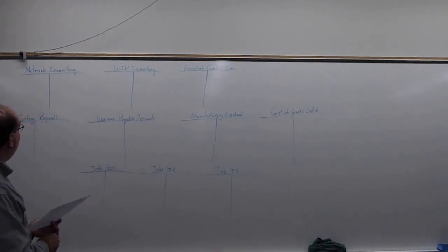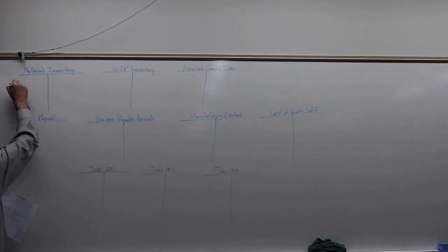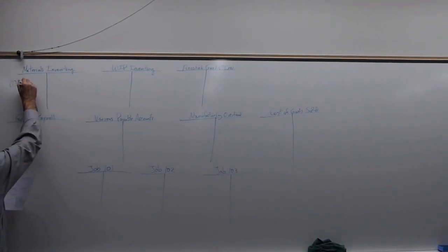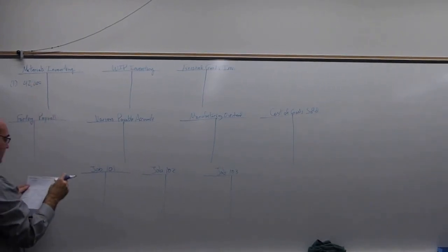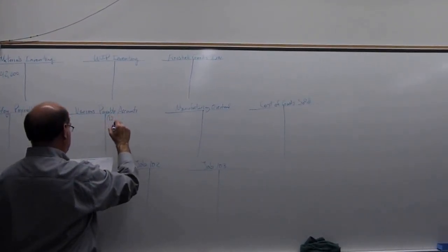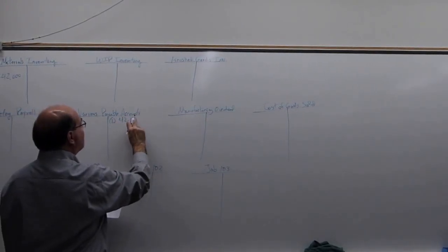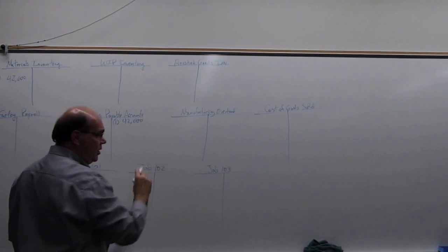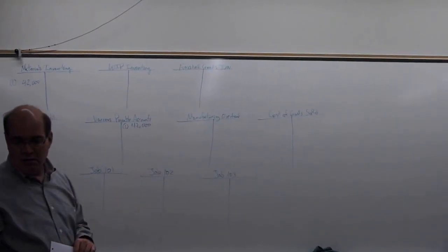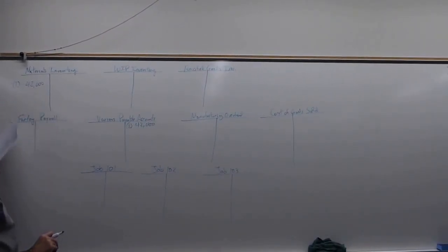Starting out: the company bought $42,000 worth of materials, credited to accounts payable. That's the first journal entry on page 756 — debit Materials Inventory $42,000, credit Accounts Payable $42,000. Left for debits, right for credits in my T-accounts.